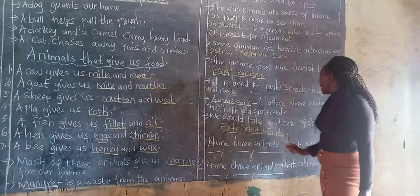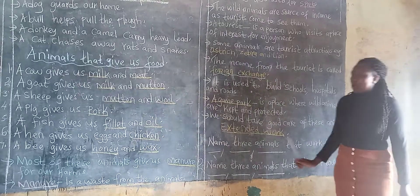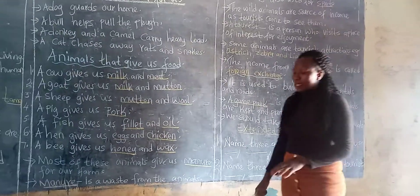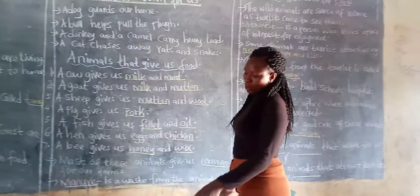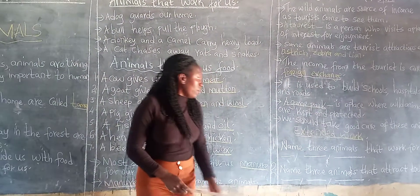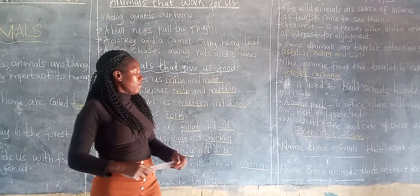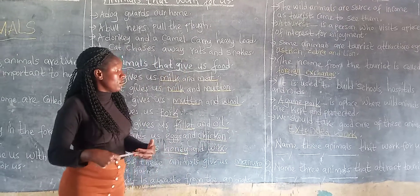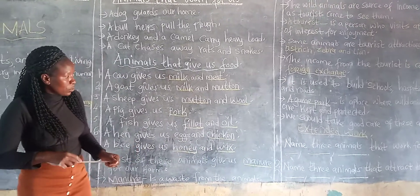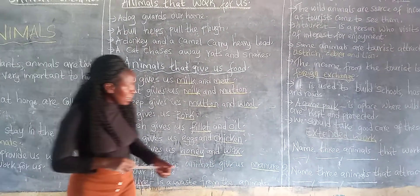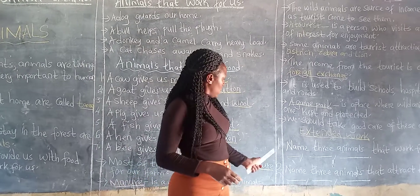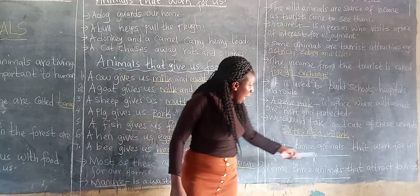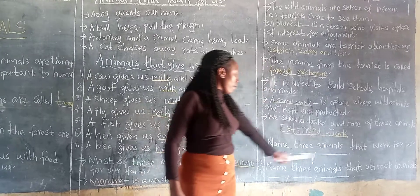Then we should take good care of these animals. So if you have animals at all, it is good for you to take good care of them. Now, before I wrap up the lesson, I would like to give you an exercise. And today our exercise is only two questions. And the first question is: name three animals that work for us.